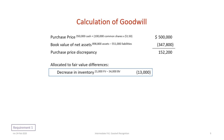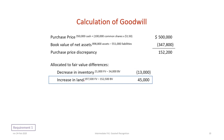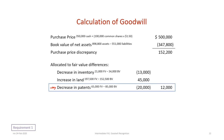We look only at items with differences between fair value and book value. It's easiest to start with the assets, taking fair value minus book value. Inventory has a $21,000 fair value versus $34,000 book value, giving a discrepancy of negative $13,000. Land has a fair value of $197,500 versus a book value of $152,500, a $45,000 increase. Patents have a fair value of $65,000 versus a book value of $85,000, giving negative $20,000.